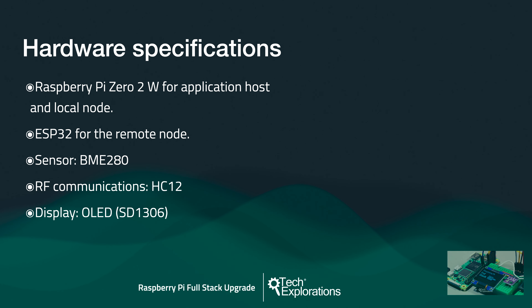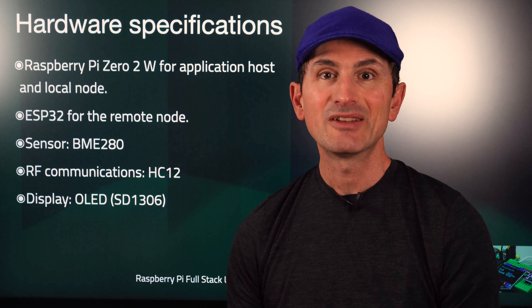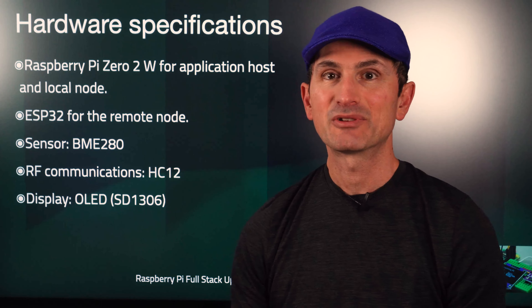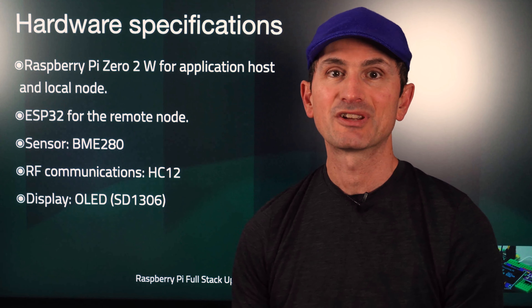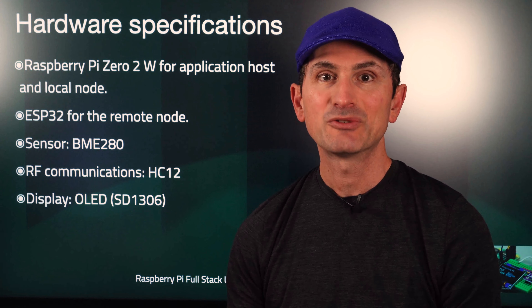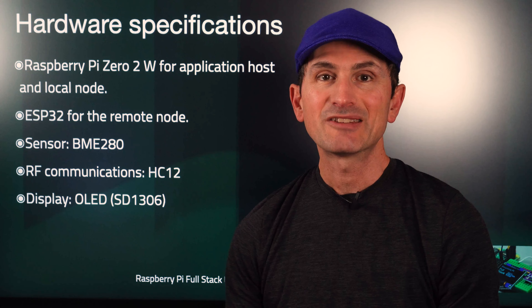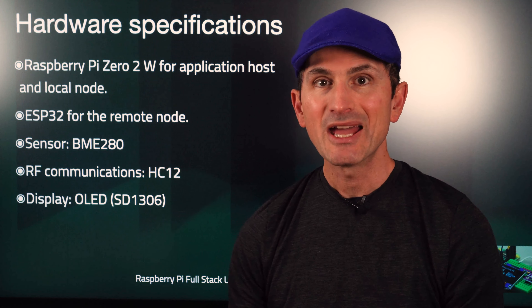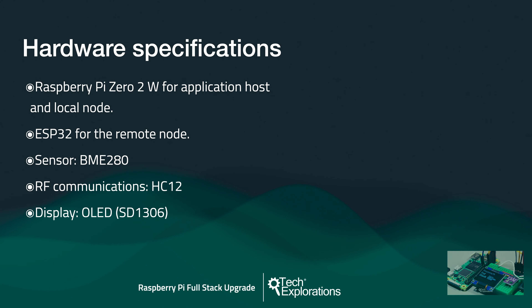There's an ESP32 for the remote node. There's nothing special about the ESP32 in this project — you can use any Arduino compatible board, even an Arduino Uno, as I did in the original course. I chose the ESP32 because I have many of these boards in my drawers and it's small enough as to not crowd my desk. In this course, I'm programming the ESP32 with the Arduino IDE version 2. In this project, the remote and local nodes share the same sensor and RF communication modules: a BME280 and a HC12.